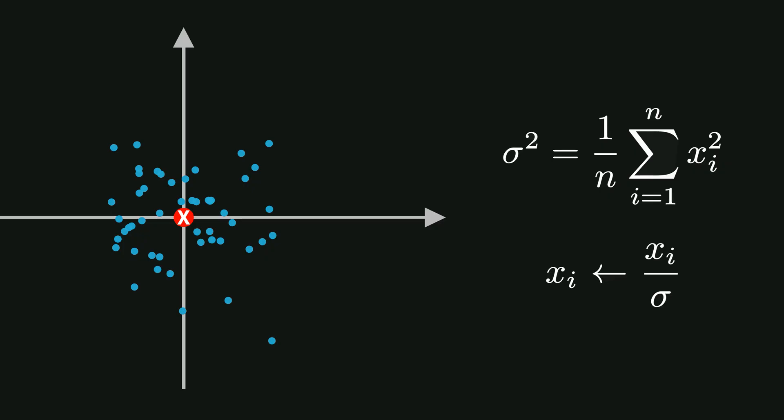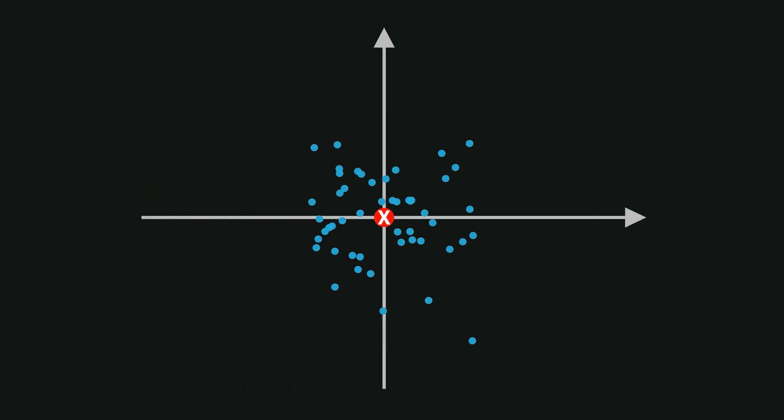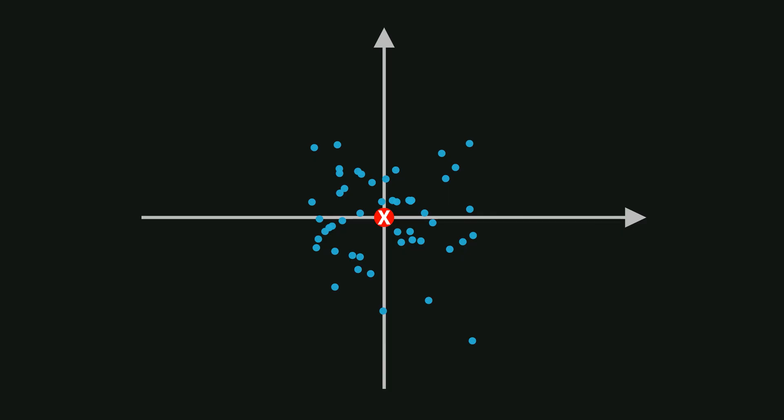Next, we divide each data point by the standard deviation. And remember, the standard deviation is just the square root of the variance. After this step, each feature has a variance of 1. And the data is both centered and scaled, making it ready for most machine learning algorithms, including neural networks.